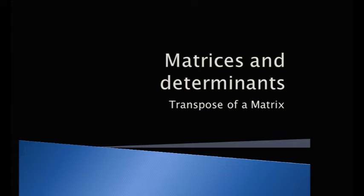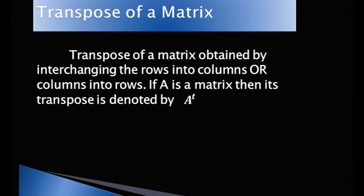Transpose of a matrix is obtained by interchanging the rows into columns or columns into rows. If A is a matrix, then its transpose is denoted by A transpose.